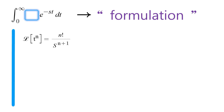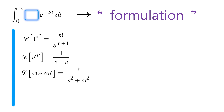We can use these formulas to solve differential equations in a fourth video. Second, for the exponential function e to the at, where a is a constant, the Laplace Transform gives us 1 over s minus a. That is also a formula to be memorized. For trigonometric functions: cosine omega t gives s over s squared plus omega squared, and sine omega t gives omega over s squared plus omega squared.